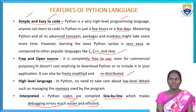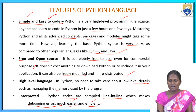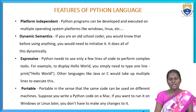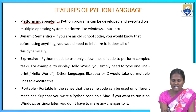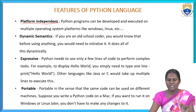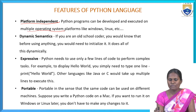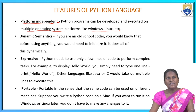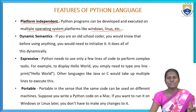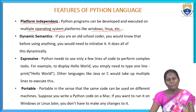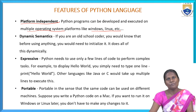There are more features in Python. The fifth feature is that Python is a platform-independent language. Python programs can be developed and executed on multiple operating system platforms like Windows, Linux, etc. So we can say Python is a platform-independent language.